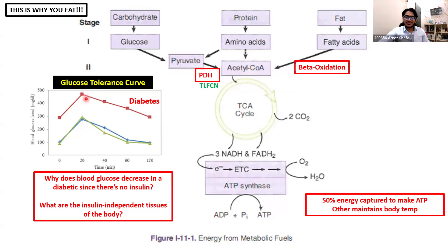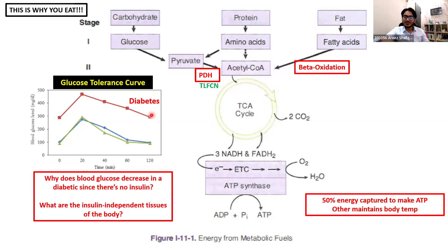An interesting thing about this graph is that even in diabetics, their blood glucose eventually does come down. That's because there are insulin-independent cells in your body — the two major tissues you need to know are the red blood cells and the brain. The brain and the red blood cells do not rely on insulin to take up glucose. So even in diabetics, even though the decrease in blood glucose is slower than in a normal person, it does still happen because the red blood cells and the brain are still taking up glucose at a steady pace.